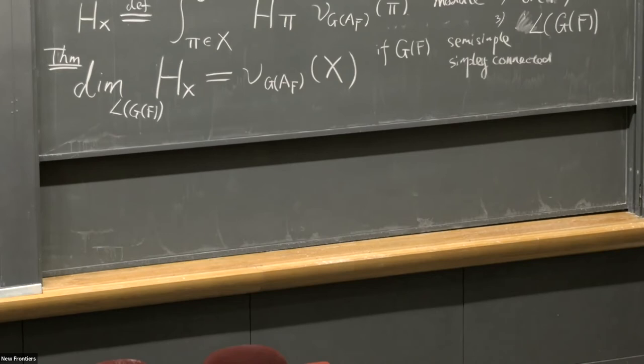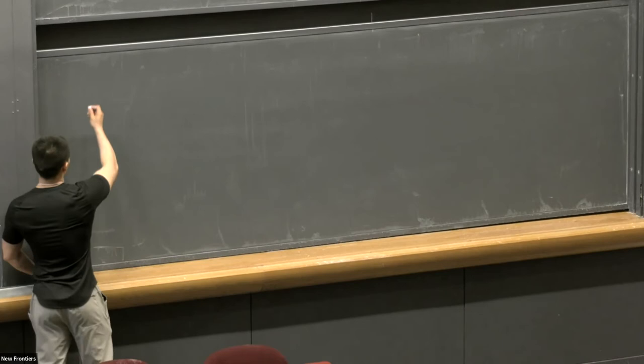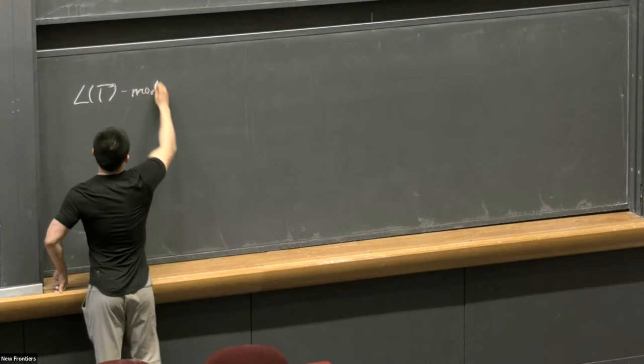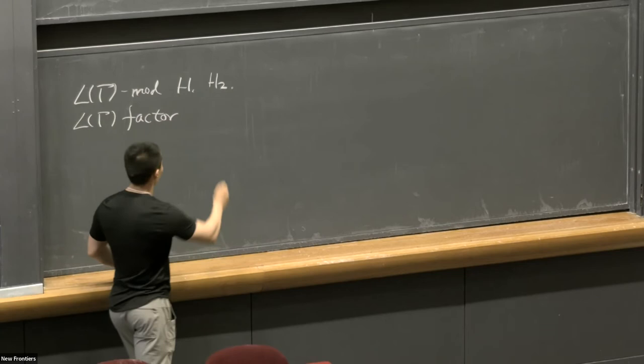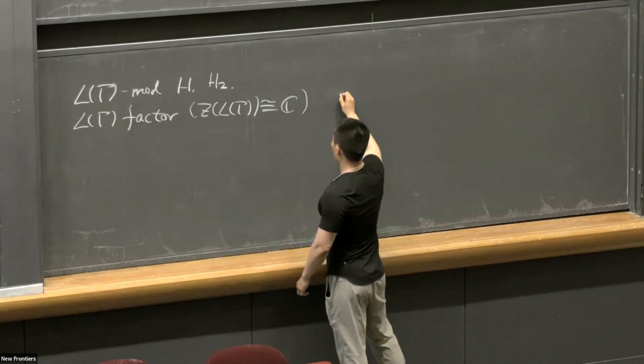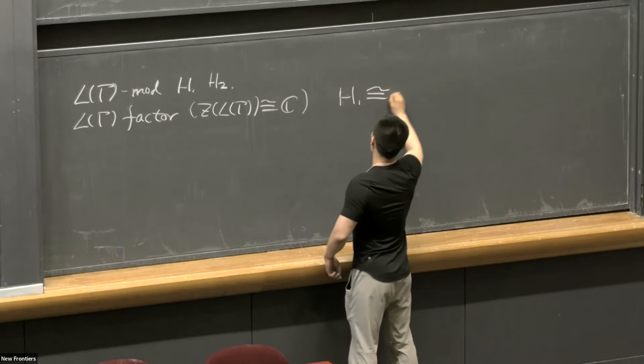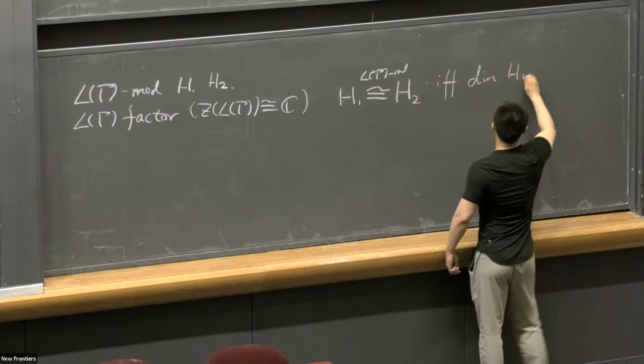Then I will have a review of an old theorem which inspired me to prove this theorem. First thing I should mention: suppose we have two L(gamma) modules, H1 and H2. If L(gamma) is a factor—you call this a type II_1 factor if gamma is not finite, meaning the center of this group algebra is just scalars—we have that H1 and H2 are isomorphic as L(gamma) modules if and only if the dimensions are the same.